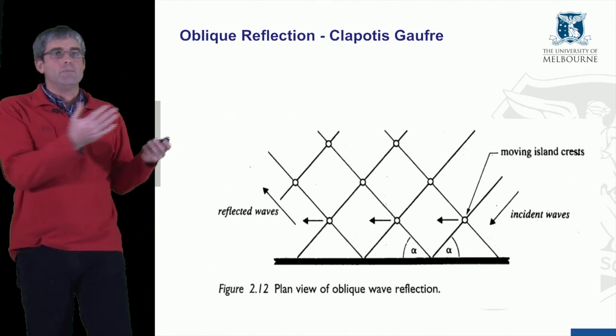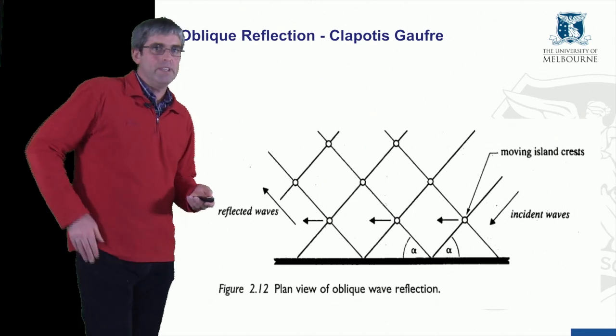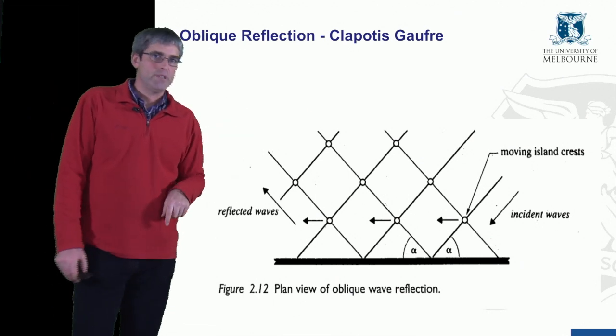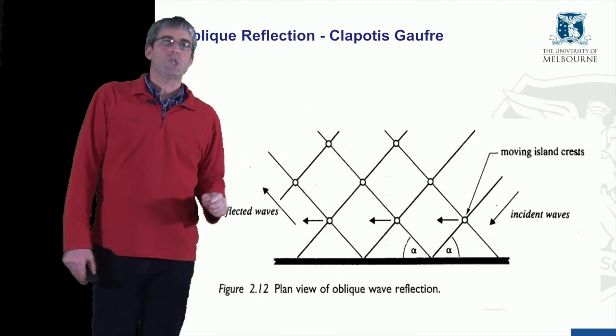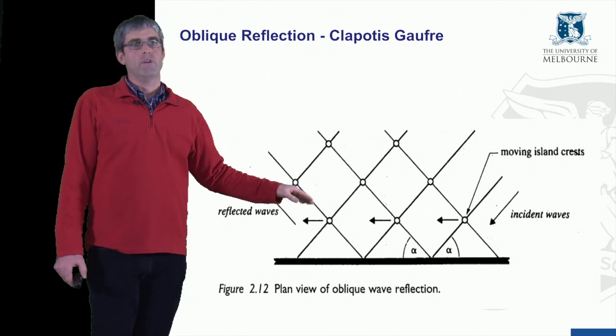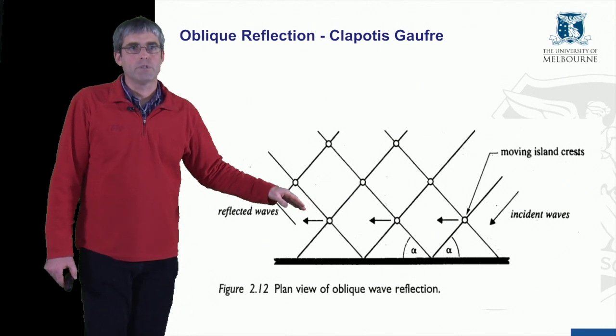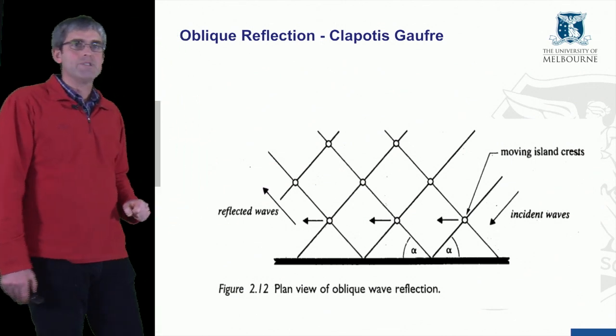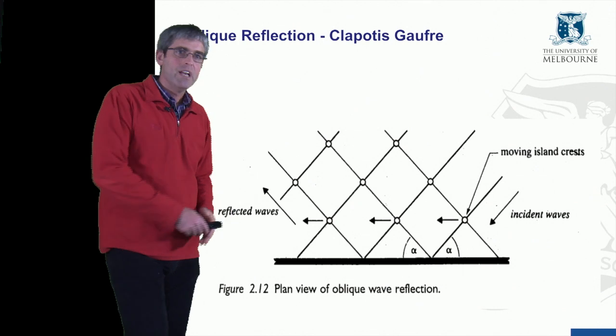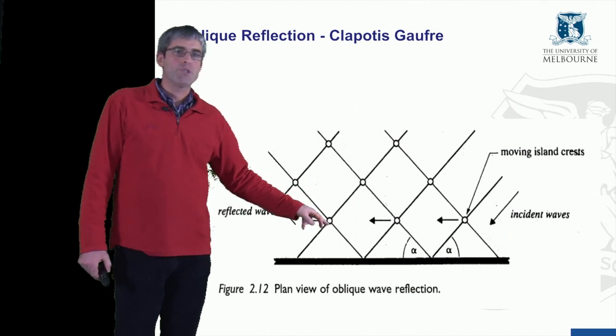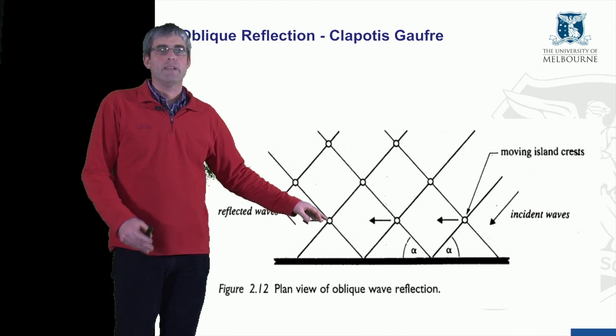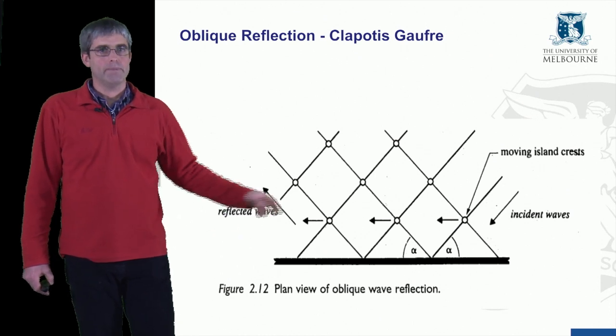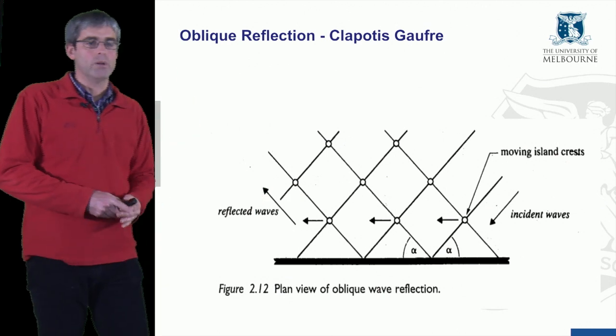If the waves are approaching at an oblique angle, not parallel to the breakwater or whatever the barrier is, as we saw in the video at the start of this topic, then they get reflected also at an oblique angle. And so we get this sort of matrix of waves forming. Clapotis Gaufre is what it's called. I think Gaufre is French for waffle. So you get kind of a waffle pattern forming as a result of this oblique reflection. You get these peaks where the two waves are superimposed, and as they move, those peaks move parallel to the barrier, the breakwater. And so they migrate along the breakwater.